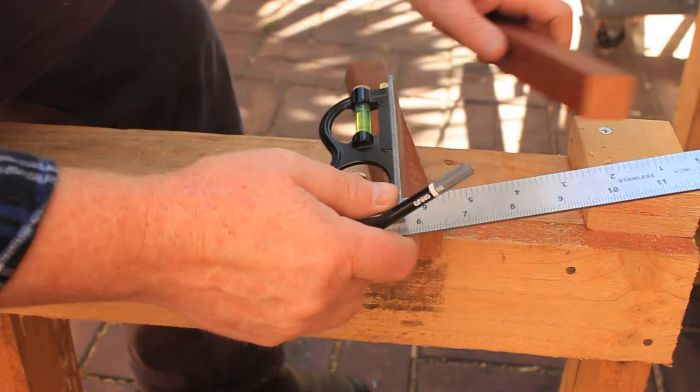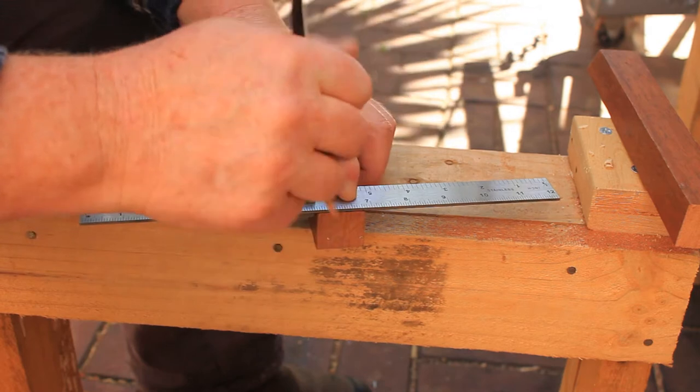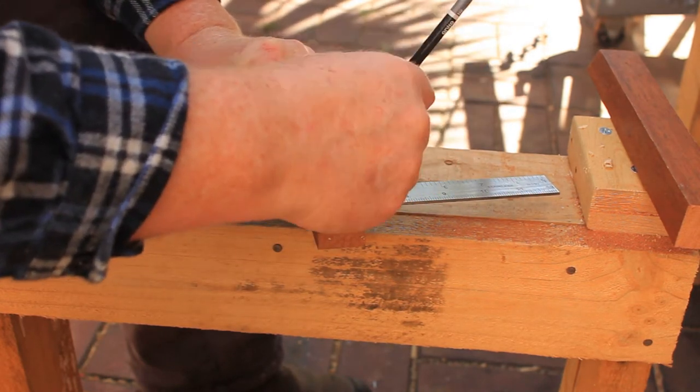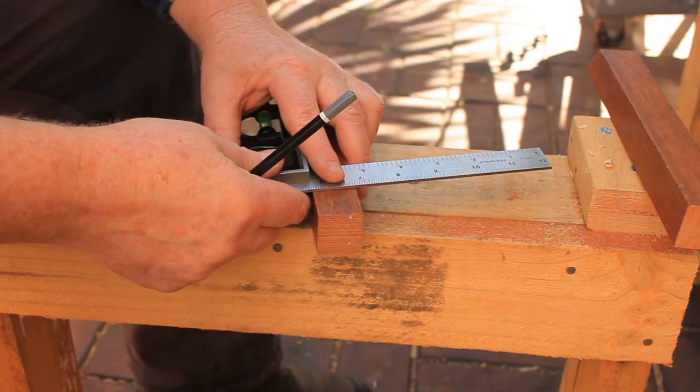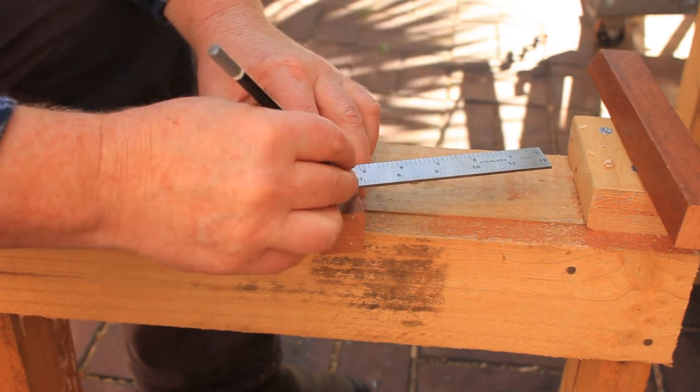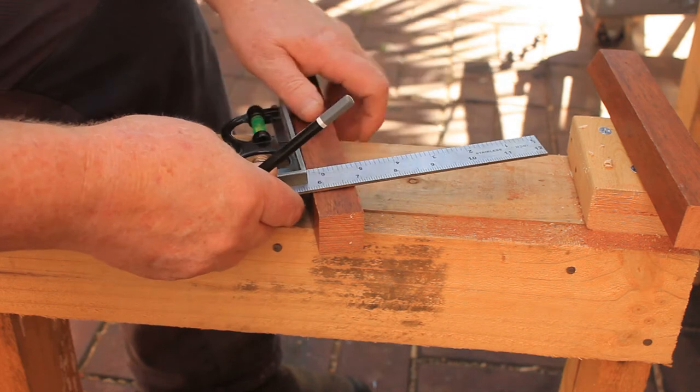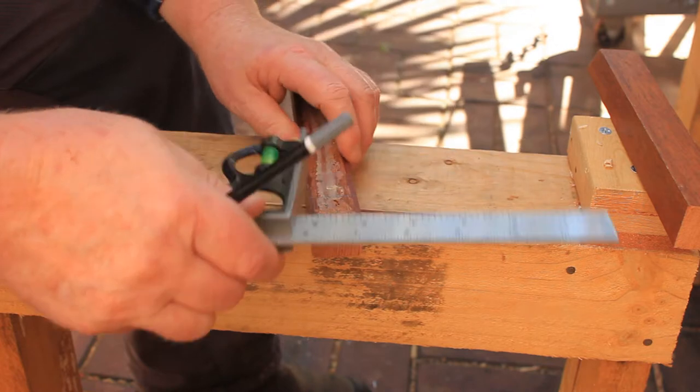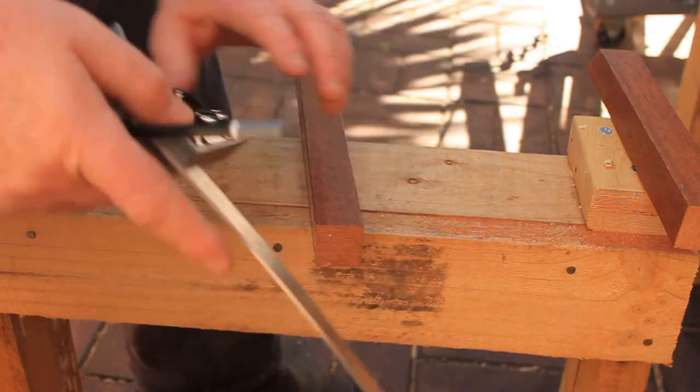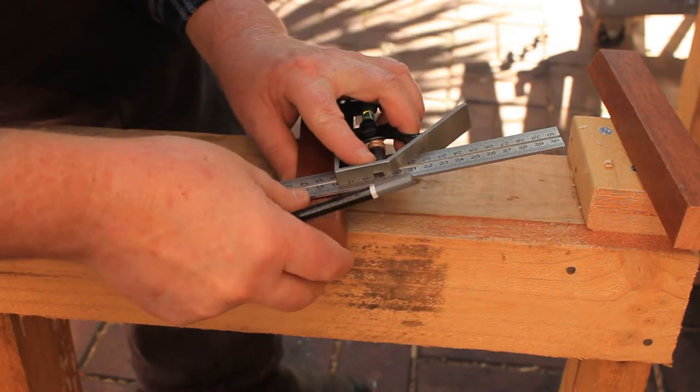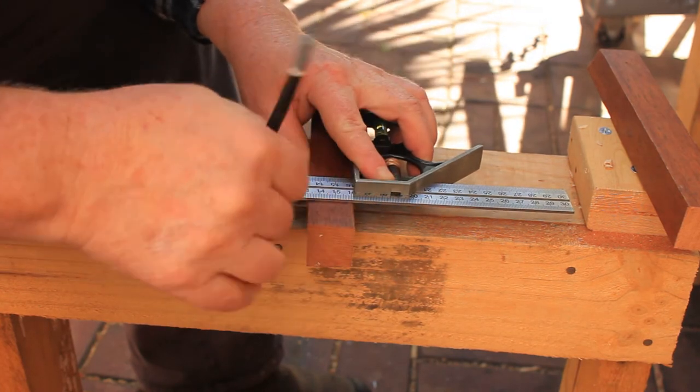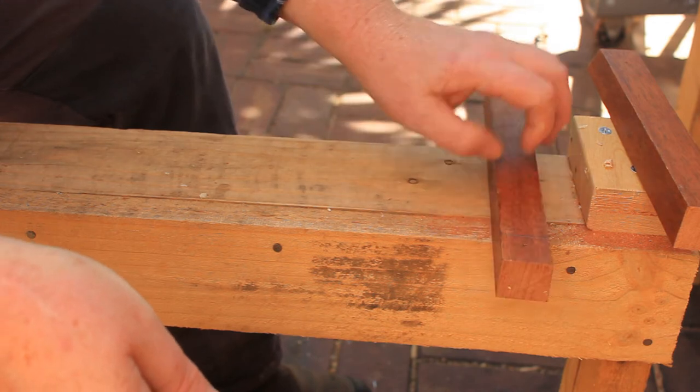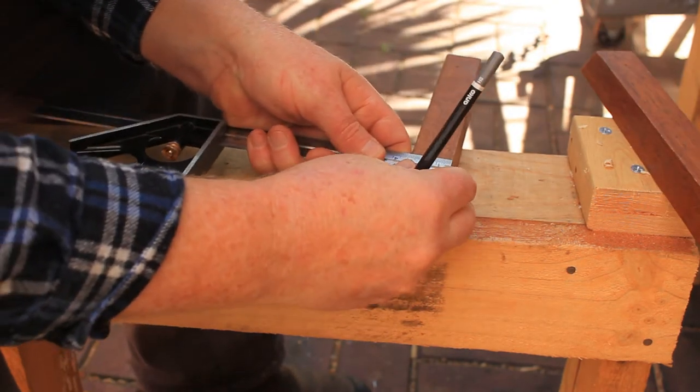Measure and mark the hole locations on the clamp jaws as shown in the plans. Do this by marking a line all the way around the jaw at each hole location. If you've done this right the lines should meet each other on the opposite side. Then mark the two hole locations on each jaw.